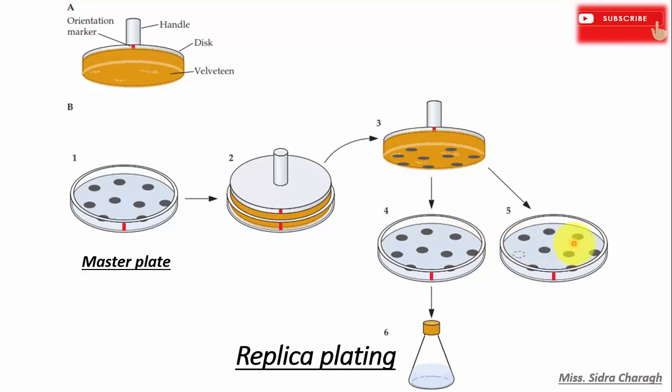And the pattern of colonies is consistent among the replicated plates because the orientation marker, this red scale, are aligned for each transfer. And in this example, minimal medium here is used as the selective medium.